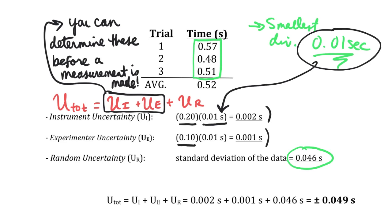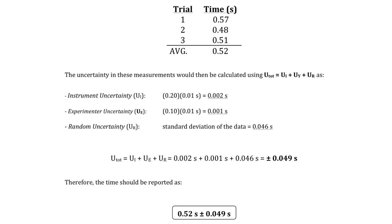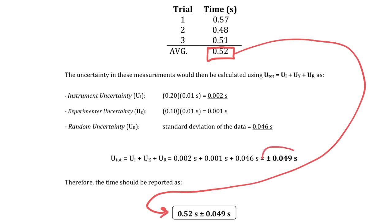To determine the total uncertainty, simply add each of those individual uncertainties. For this particular measurement you have an uncertainty of plus or minus 0.049 seconds, or about plus or minus 49 milliseconds. The best estimate — the average of those values — can be reported along with the total uncertainty to give a reported value of 0.52 seconds plus or minus 0.049 seconds.